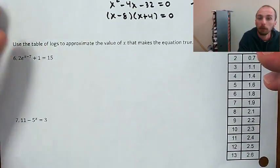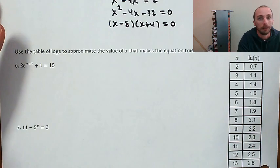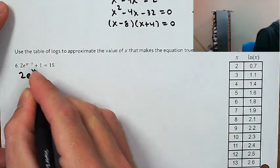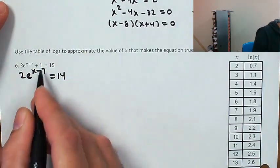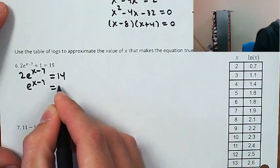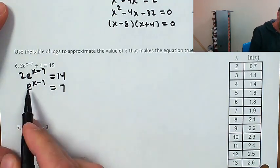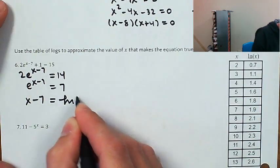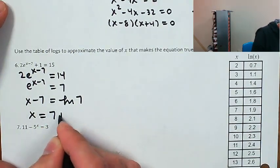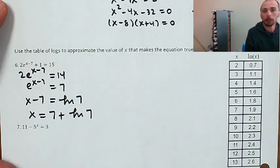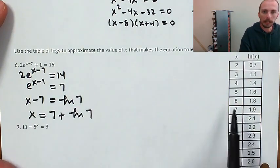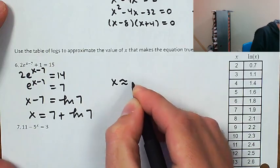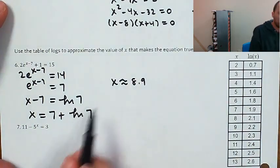Use the table of logs to approximate the value of x. I'll solve for an exact solution first. I'm going to subtract 1, then isolate the exponential by dividing by 2. Taking the natural log of both sides: the natural log of e to the (x minus 7) is just x minus 7, and that equals natural log of 7. Solve for x by adding 7 to both sides — that's an exact value. The natural log of 7 is 1.9, so adding 7 gives approximately 8.9.